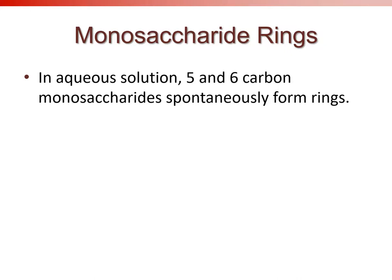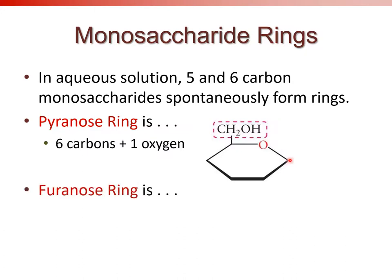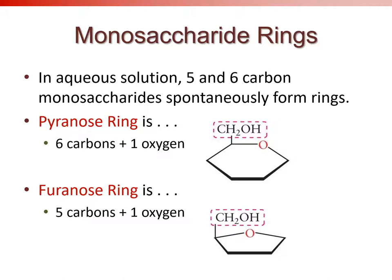Five- and six-carbon rings have specific names. A pyranose ring has five carbons plus one oxygen in the ring, with a sixth carbon as a tail outside the ring. A furanose ring has four carbons plus one oxygen in the ring, with a fifth carbon as a tail outside. These names simply describe how many carbons are in the ring structure.